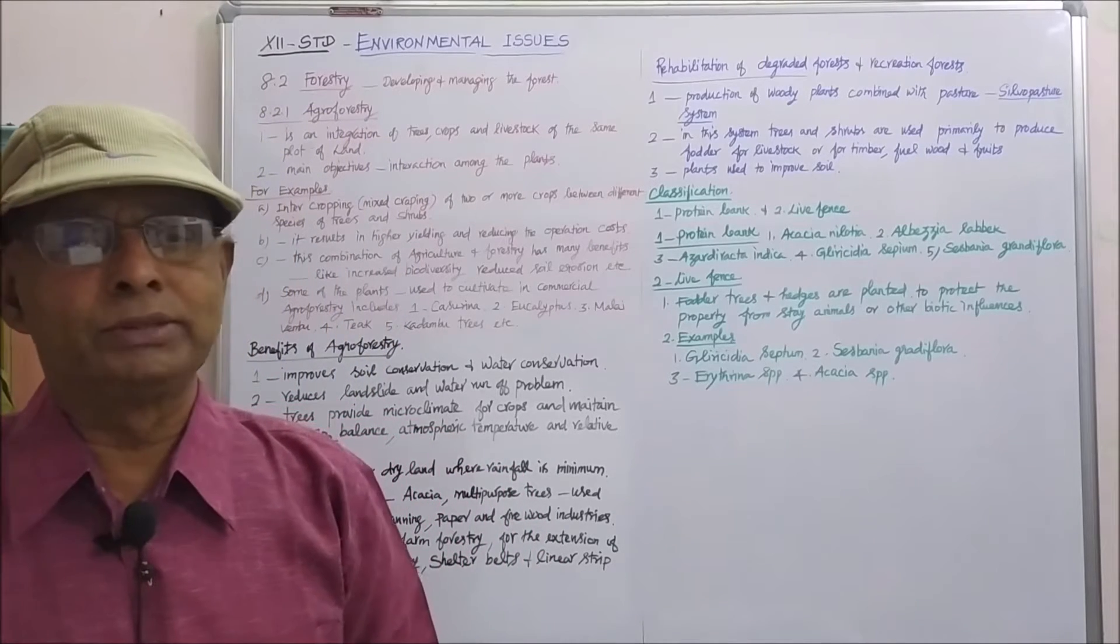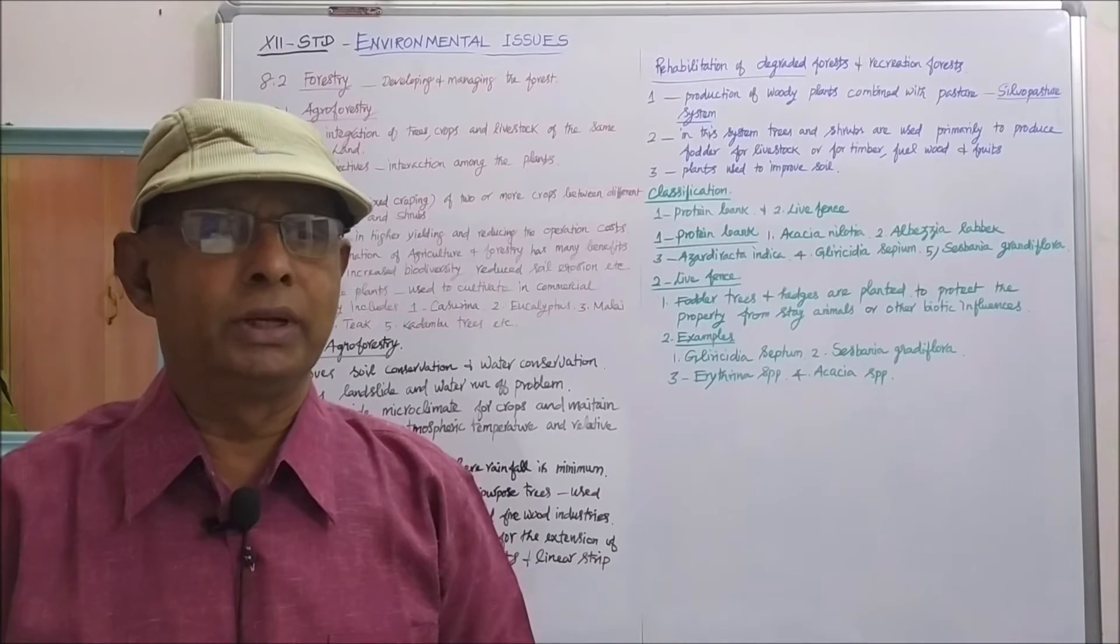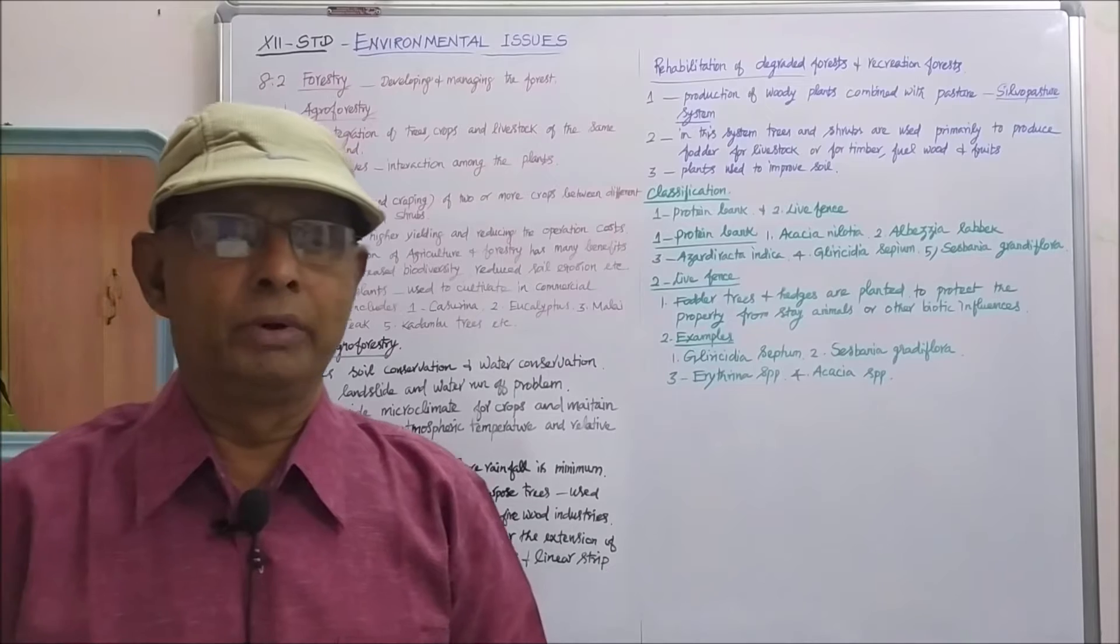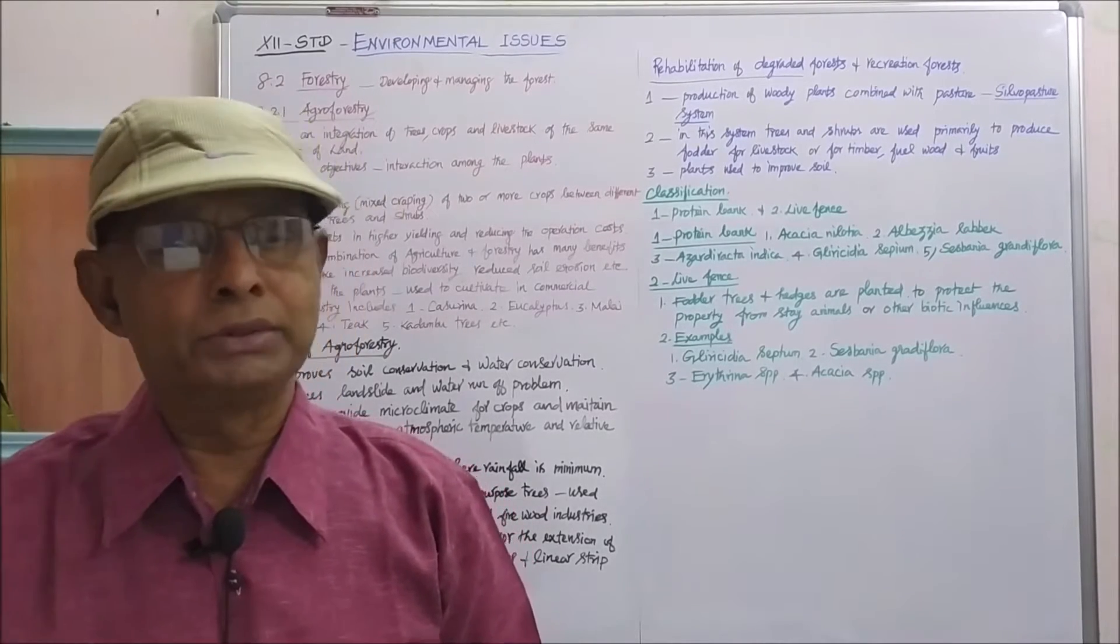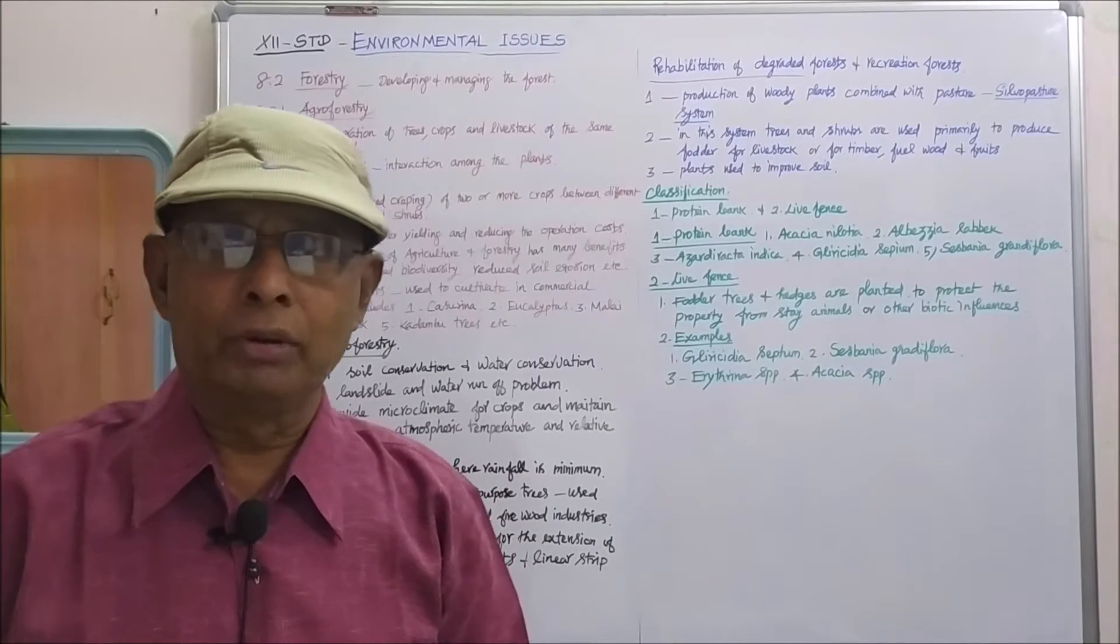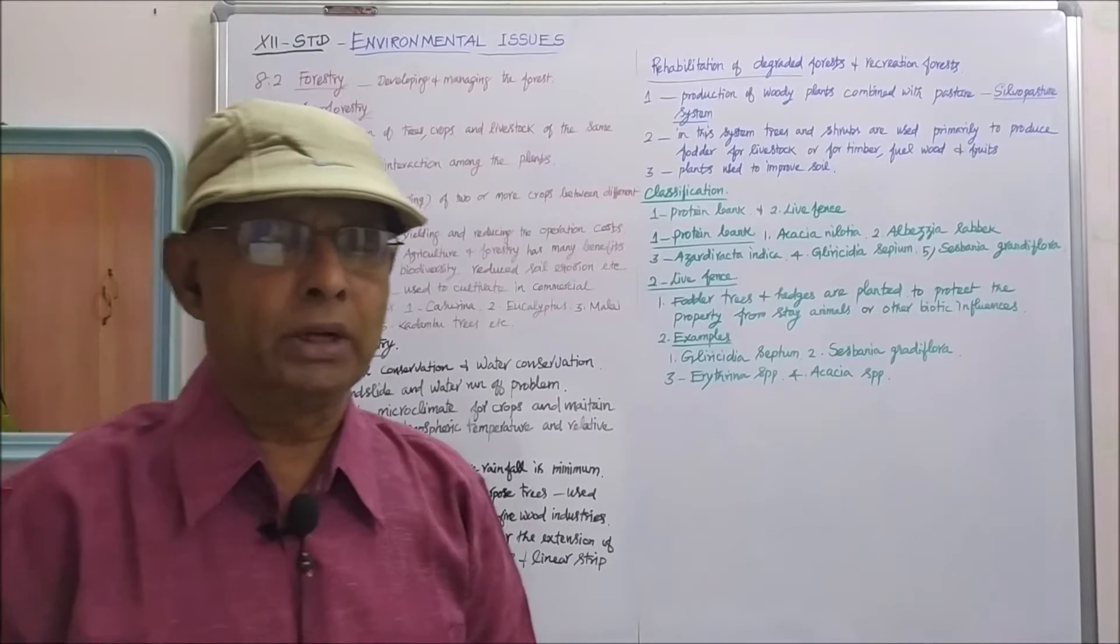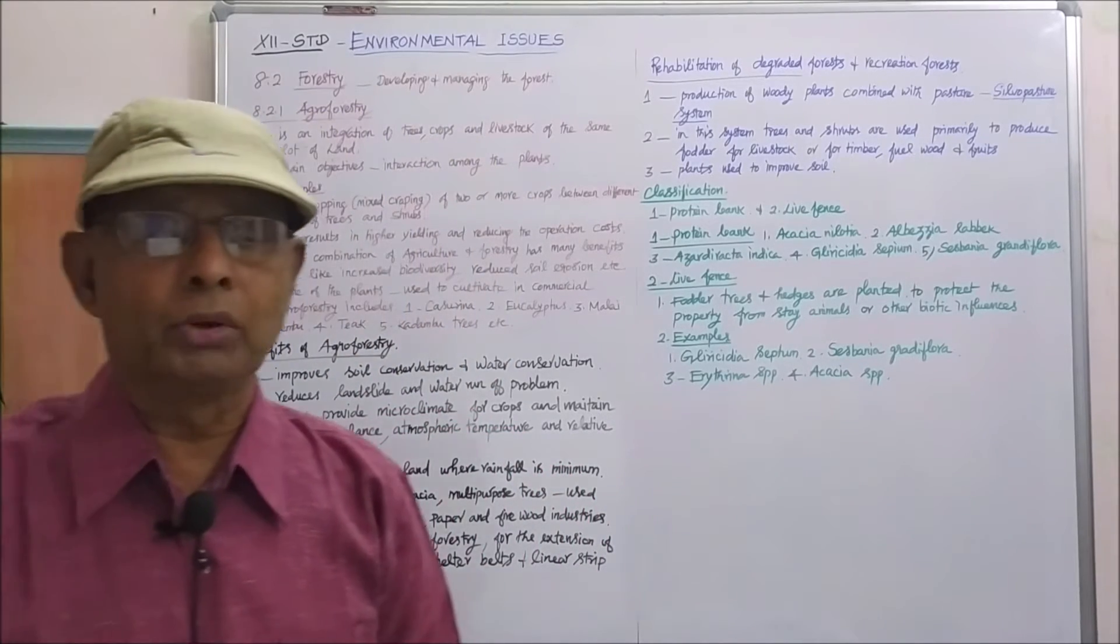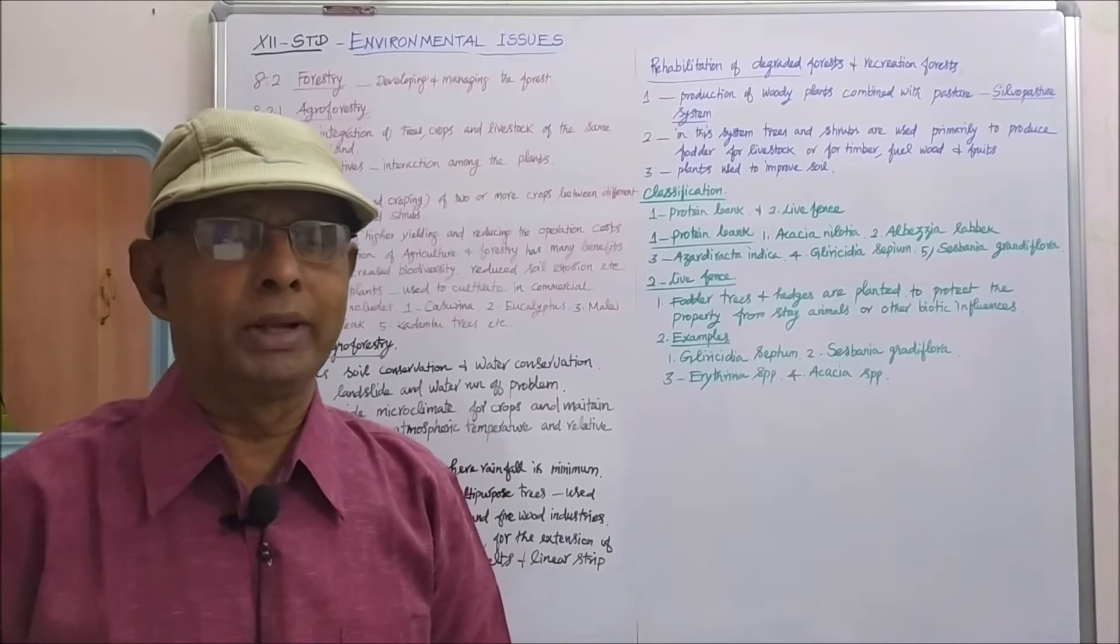It results in higher yielding and reducing the operation costs. This combination of agriculture and forestry has varied benefits, including increased biodiversity and reduced erosion. Some of the major species cultivated in commercial agroforestry includes: number 1, Casuarina; number 2, eucalyptus; number 3, melia dubia;